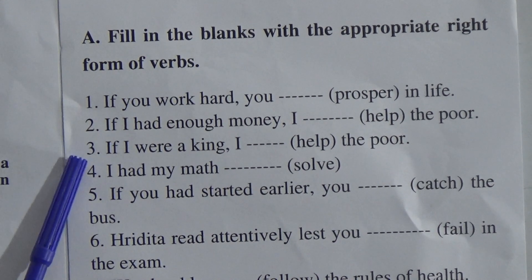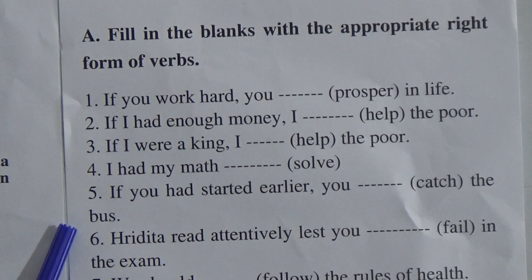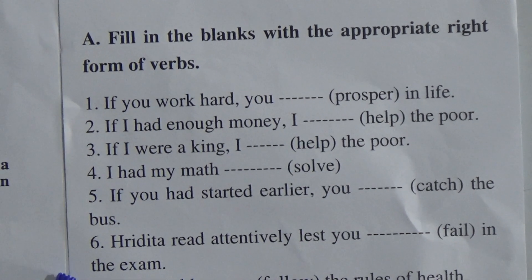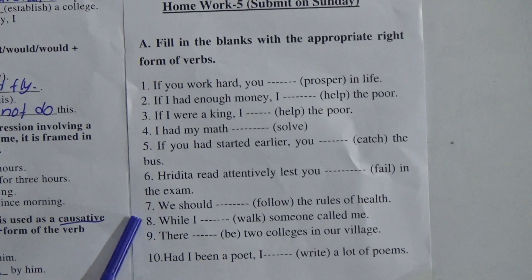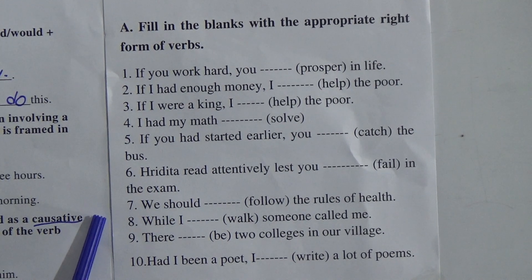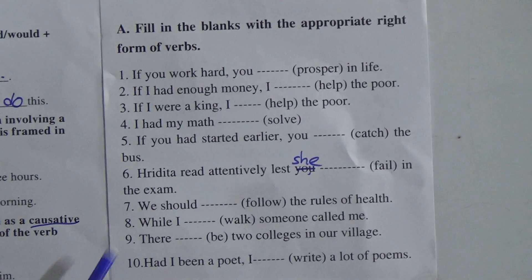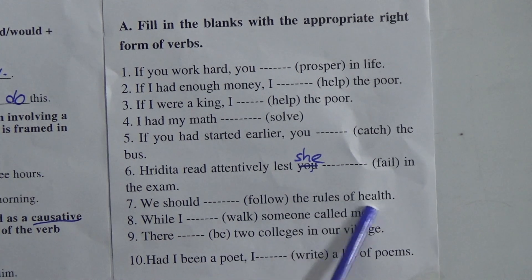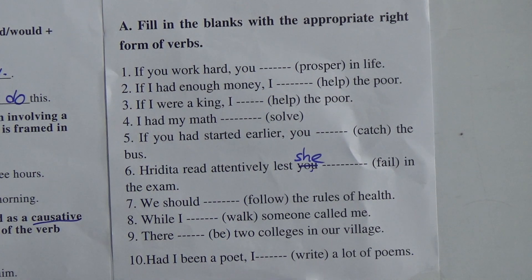Homework: do HW 5 and submit on Sunday. Fill in the blanks with the appropriate right form of verbs. 1) If you work hard, you dash prosper in life. 2) If I had enough money, I dash help the poor. 3) If I were king, I dash help the poor. 4) I had my math dash solved. 5) If you had started earlier, you dash catch the bus. 6) Read attentively lest she dash fail in the exam. 7) We should dash follow the rules of health. 8) While I walk, someone called me. 9) There dash two colleges in a village. 10) Had I been a poet, I dash write a lot of poems.